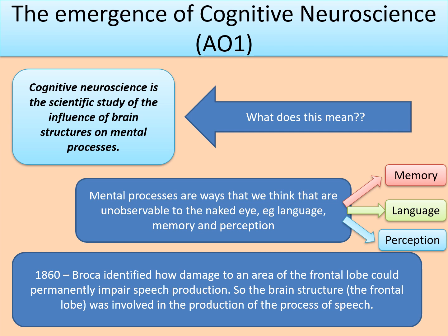Cognitive neuroscience looks at the brain structures that are important for memory, language and perception. Even before brain scanning techniques existed, people were trying to map which bit of the brain is responsible for which function. Way back in the 1800s, Broca identified how damage to an area of the frontal lobe could permanently impair speech production — the frontal lobe was involved in the process of speech production.